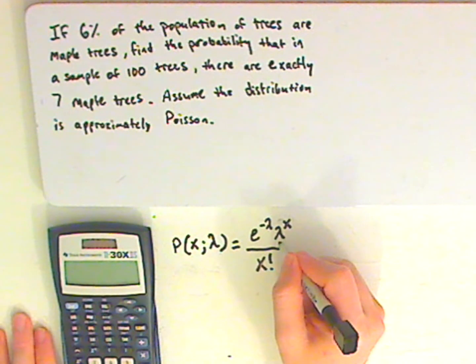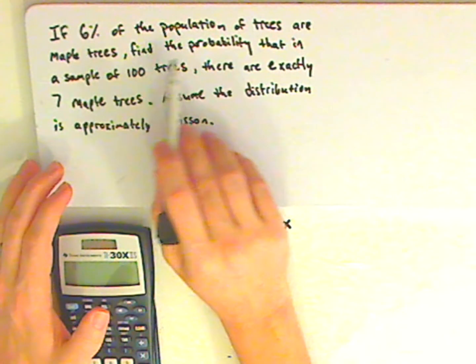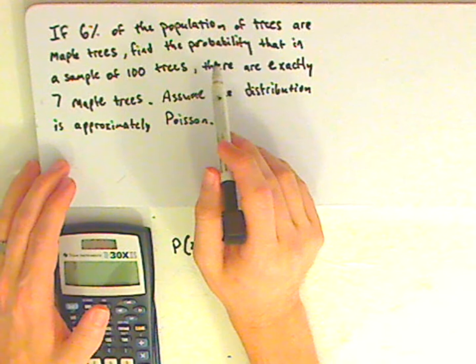Now, to find the lambda, you have 6% of the population of trees.